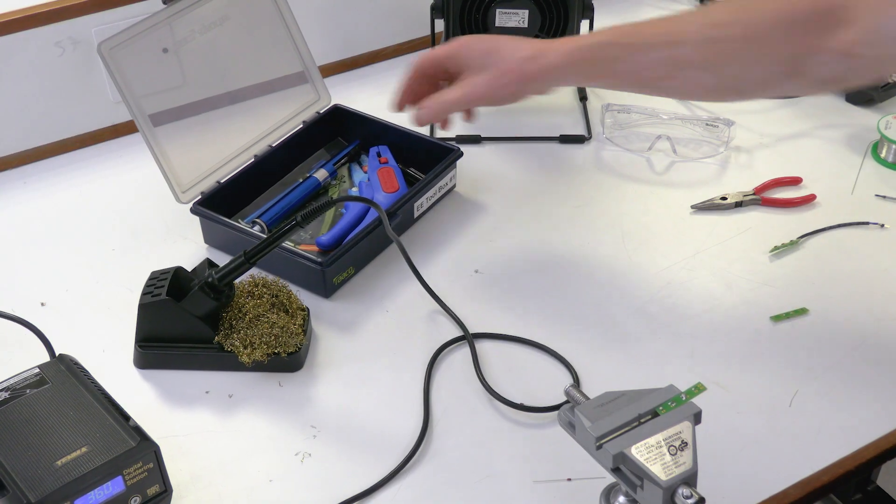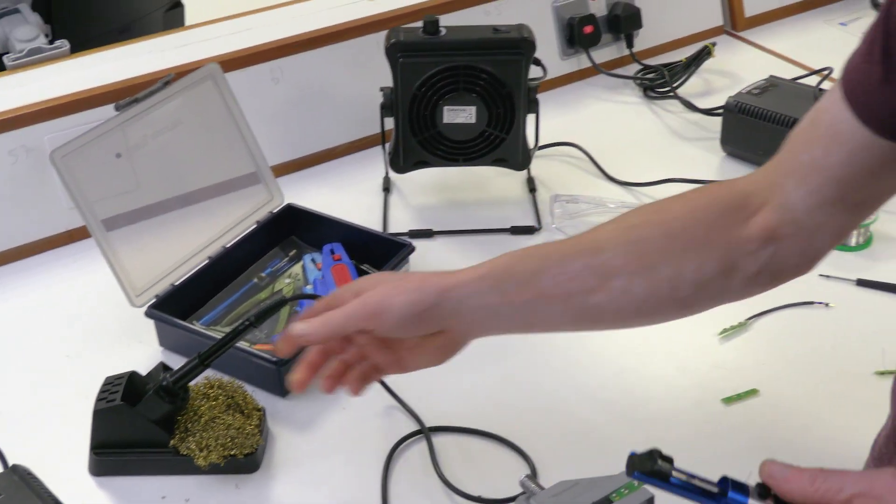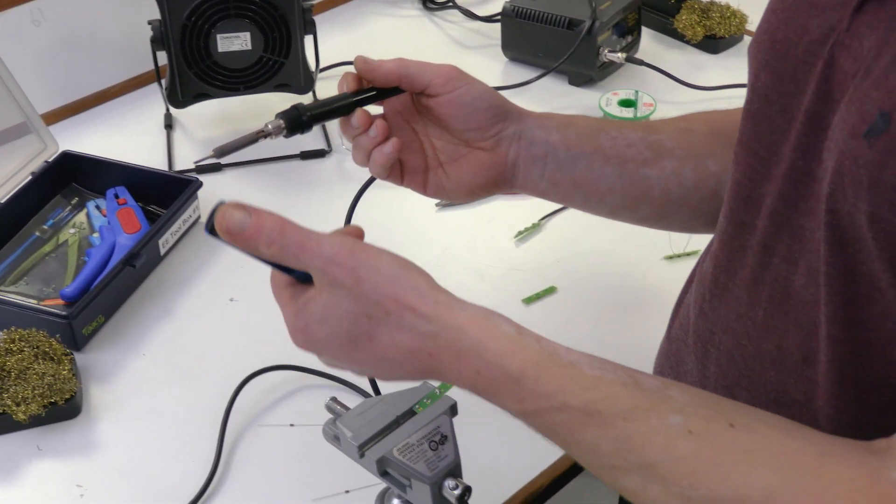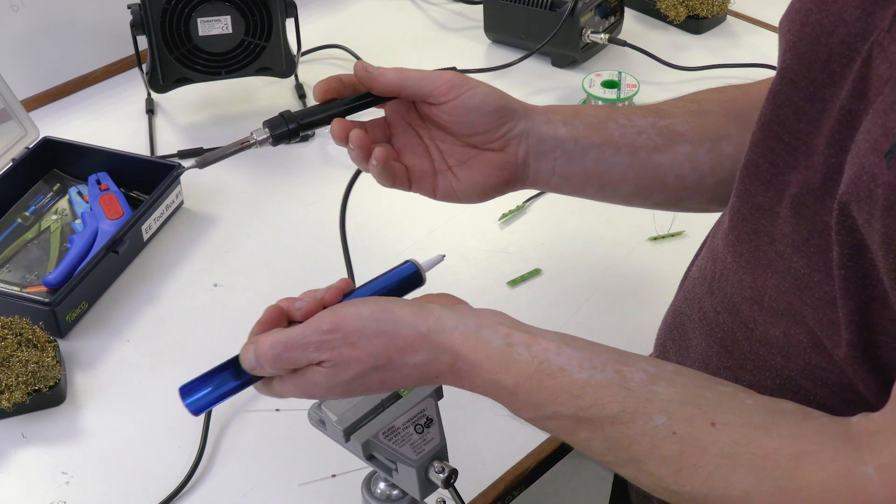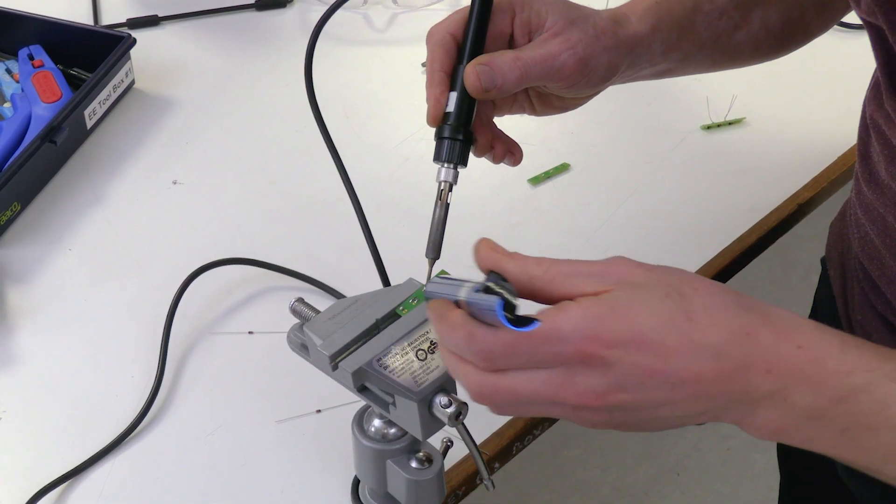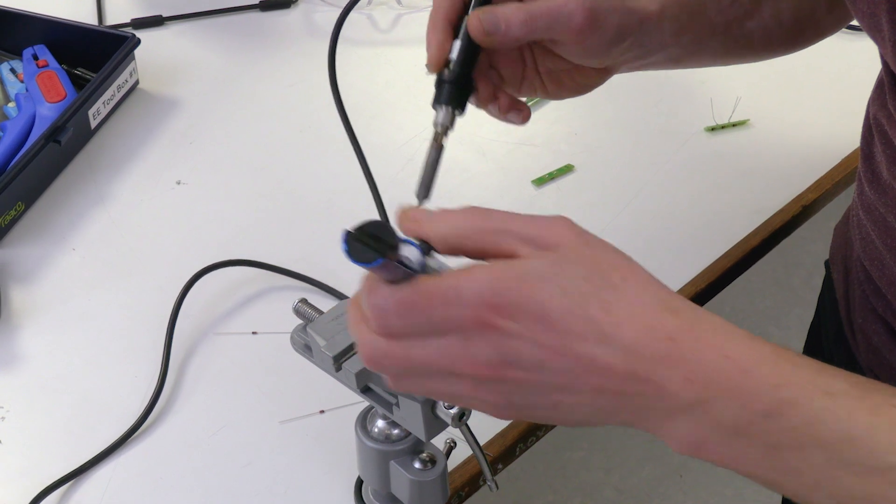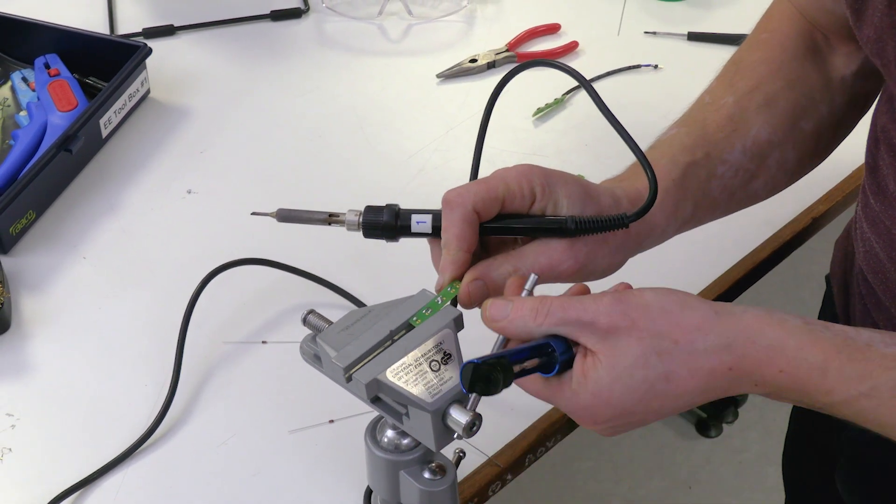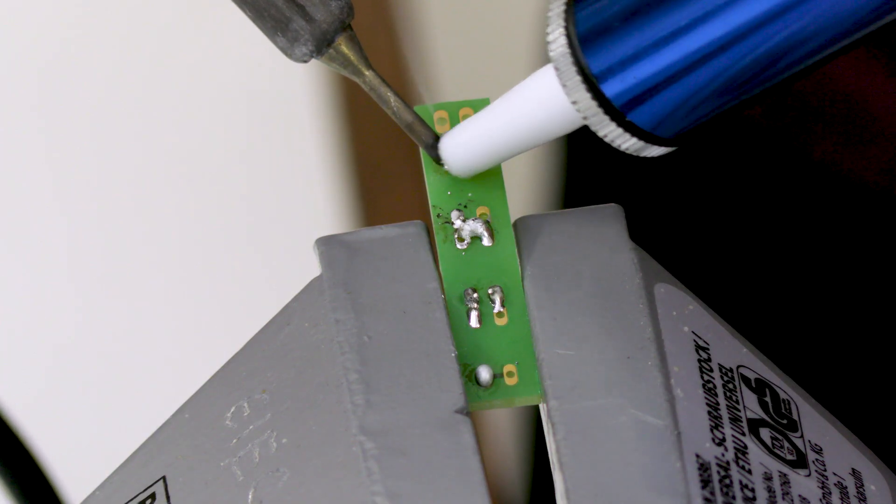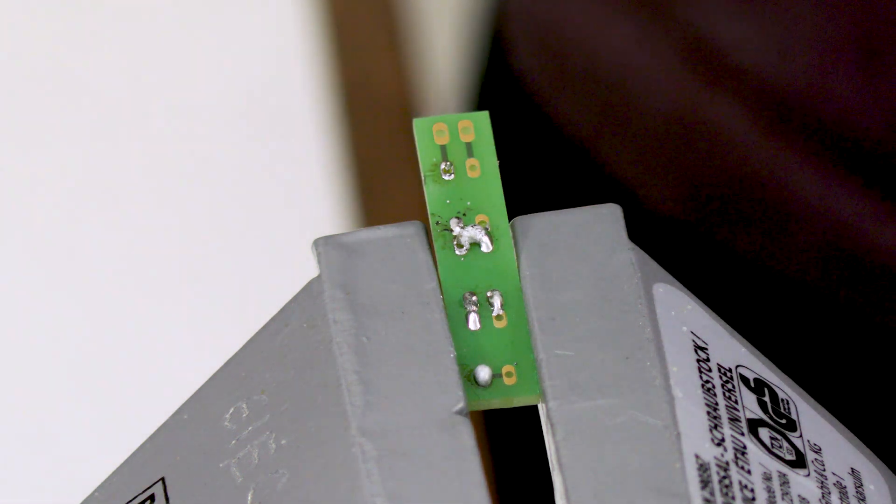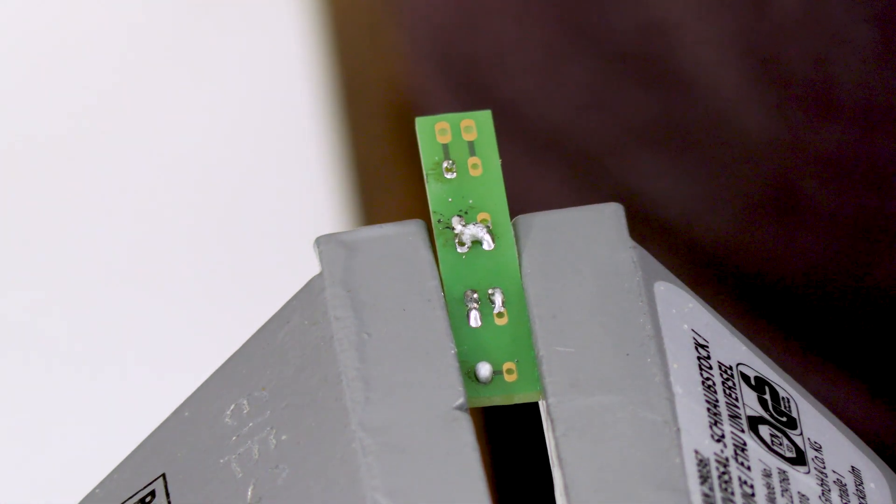You can grab a desoldering pump from your tool kit to do this. Cock the pump and melt the solder with your iron. When the solder has melted trigger the pump so that it sucks the solder off the board. Repeat this process if there is still some solder left on the board. Then you can try again.